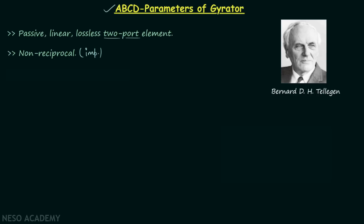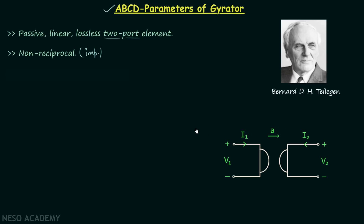We will prove that gyrator is non-reciprocal after finding its ABCD parameters. This is the symbol of a gyrator — it is a two-port device. The quantity A is known as gyration resistance, measured in ohms. The arrow in the representation is very important because gyrator is non-reciprocal, and the arrow indicates the direction of transmission.